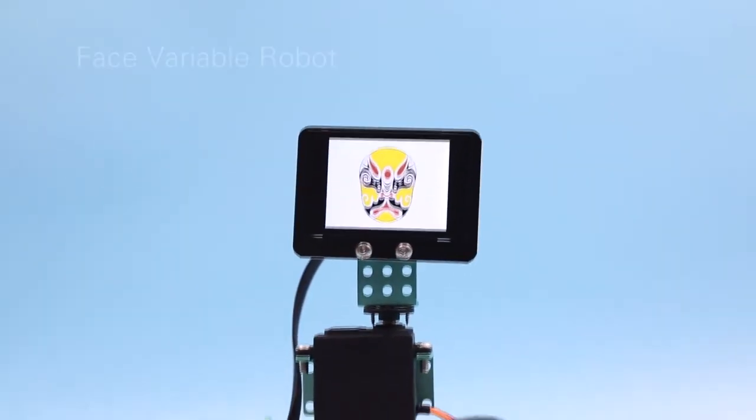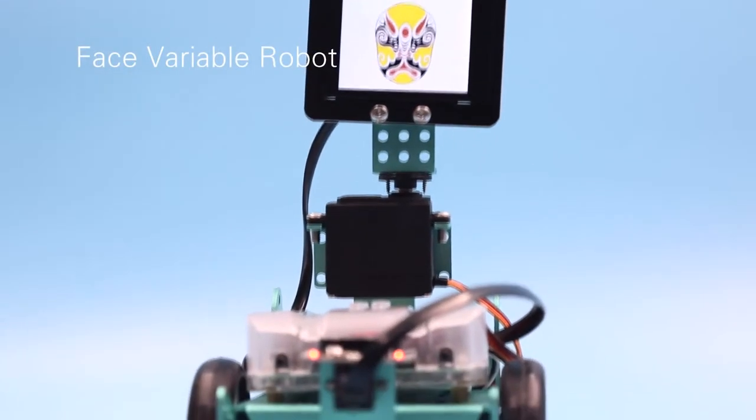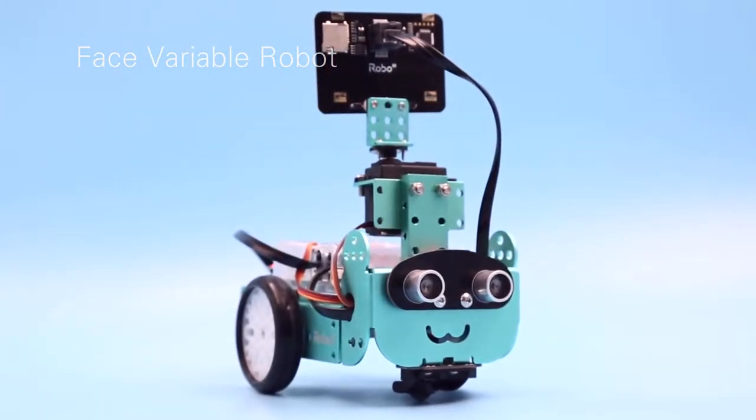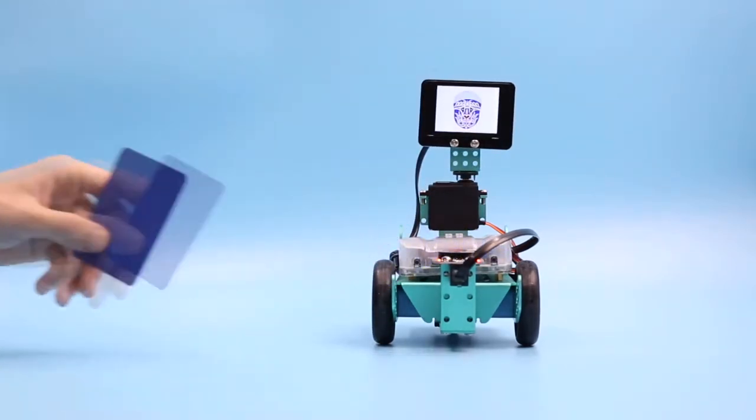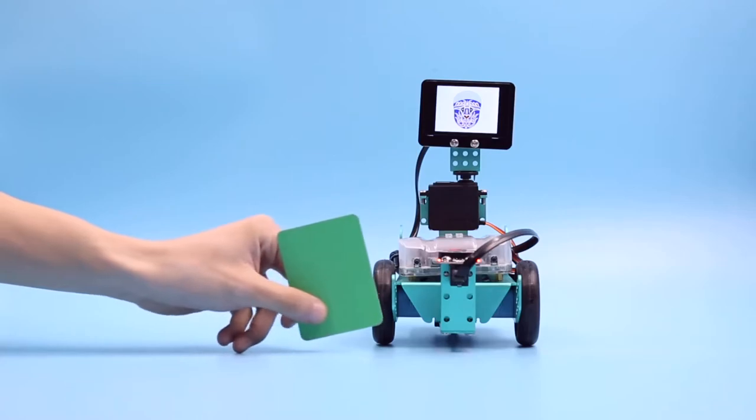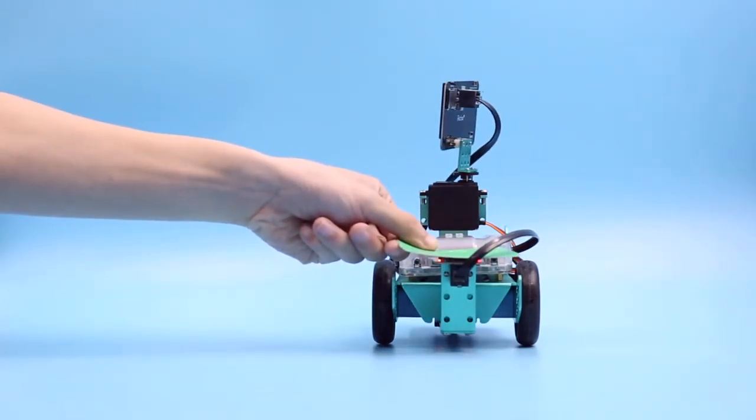Color variable robot mainly uses the LCD screen module, color recognition sensor and steering gear. After the program starts, it can switch fast according to different colors detected by the color recognition sensor.